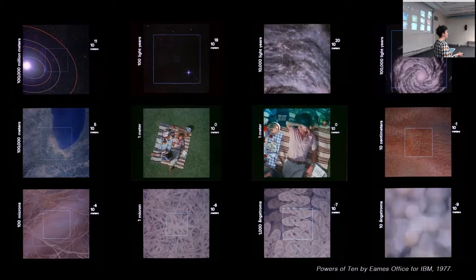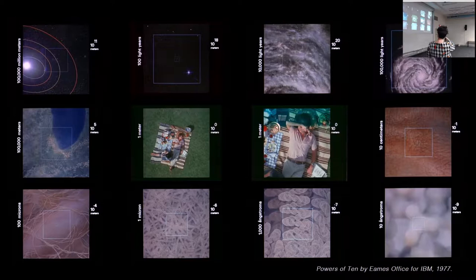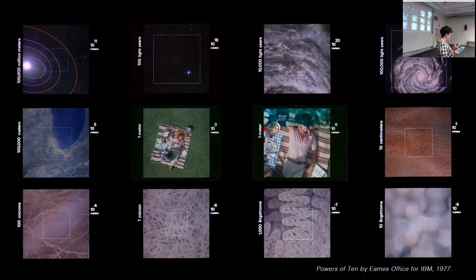The film begins with two people having a picnic in Chicago, and for the first half of the film the camera zooms out so that every 10 seconds we view the starting point from 10 times further out. The second half of the film takes the starting point again and zooms inwards with 10 times more magnification every 10 seconds. This creative output chooses one specific concept — scale — in order to synthesize a disparate array of scientific knowledges from the micro to the macro scales of the universe and to make it accessible to a range of audiences.